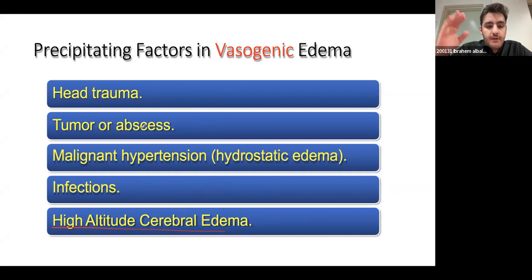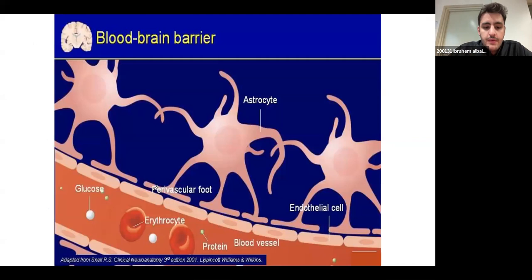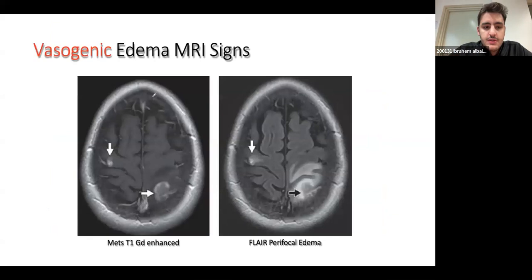The main takeaway from this section is to know the exact etiologies of vasogenic versus cytotoxic edema. Regarding the blood-brain barrier: as you know, you have endothelial cells, tight junctions, and astrocytes forming foot processes, controlling what gets in and out. You should know this from your histology or physiology lectures. When fluid leaks out into the interstitium, that's vasogenic.